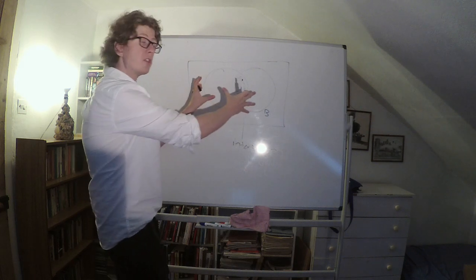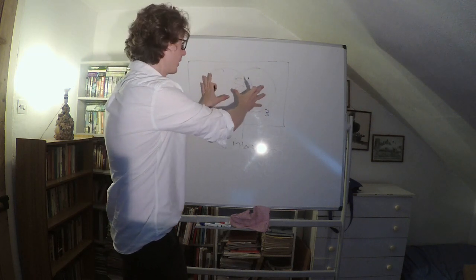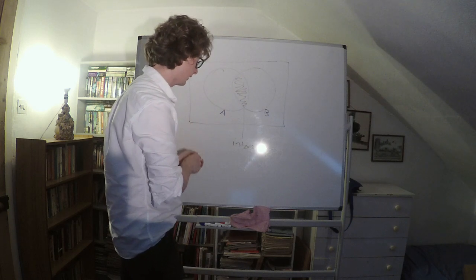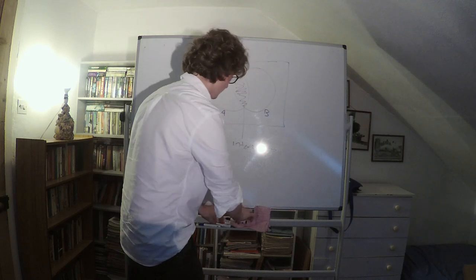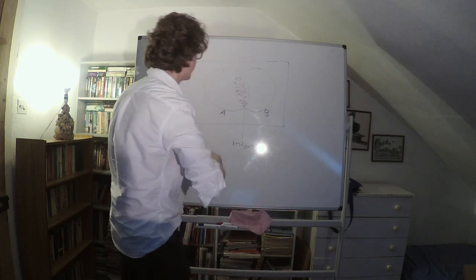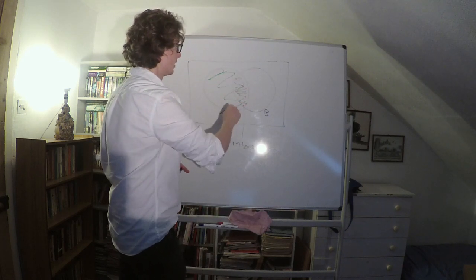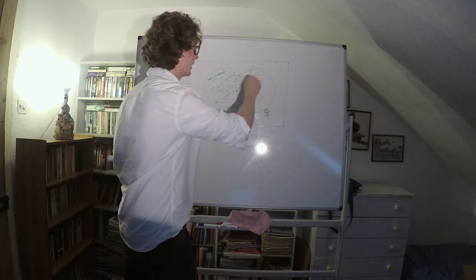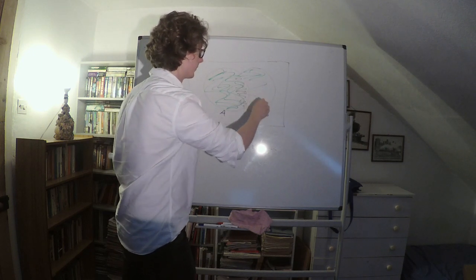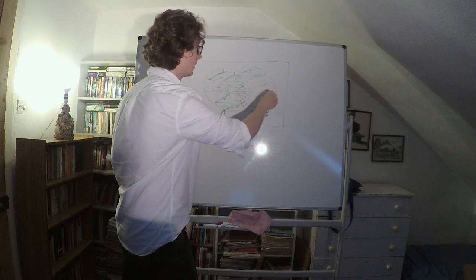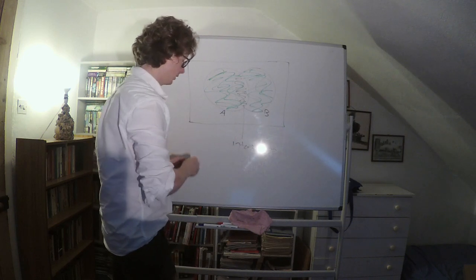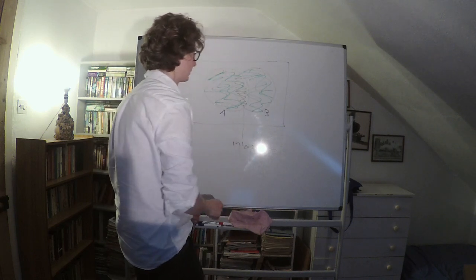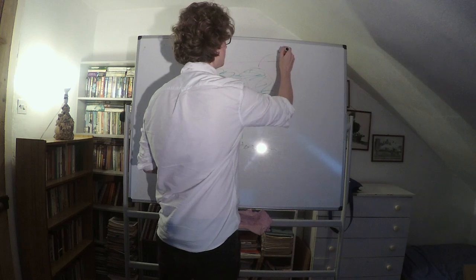You can also think about the region you get by just pooling all the sets, both sets together — that will be the region I'm shading in green, the region you get by taking A and putting it together with B. This is what's called the union of A and B.